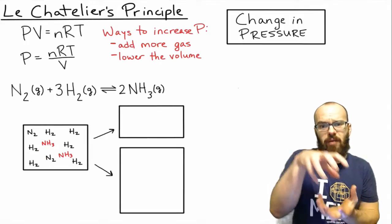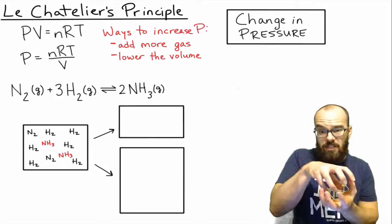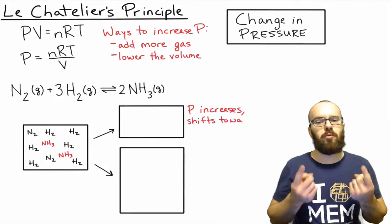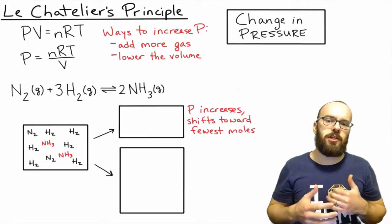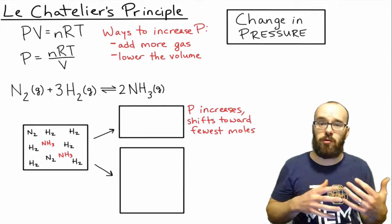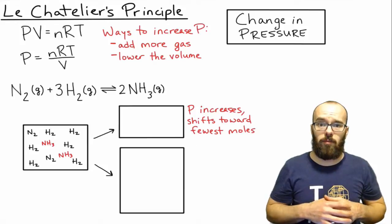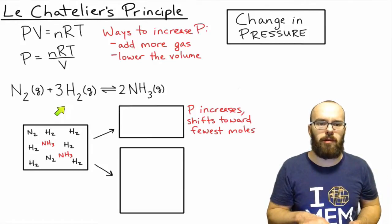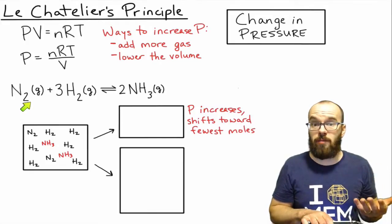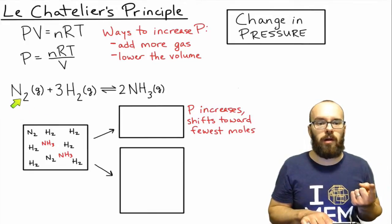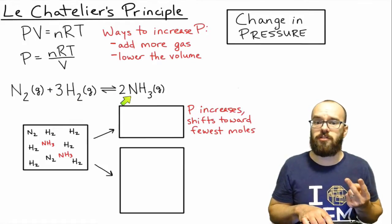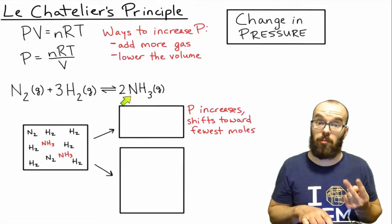First, let's compress it, which would decrease the volume and therefore increase the pressure. The pressure will go up. That's going to shift the reaction toward wherever there's the fewest number of moles, whether that's the products or the reactant side. So let's take a look at our equilibrium reaction. On the left side, stoichiometrically, for every one, two, three, four moles of gas we have here, we can produce just two moles of gas on our product side.